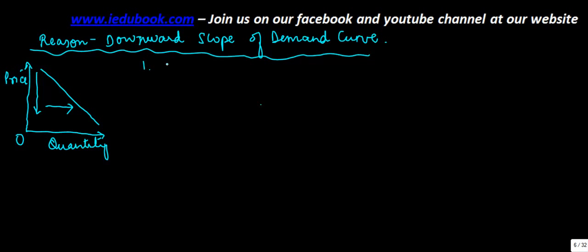Now what are the reasons why does this happen? I will take them one by one. The first one is the law of diminishing marginal utility. Now this law was basically formed by Mr. Marshall.